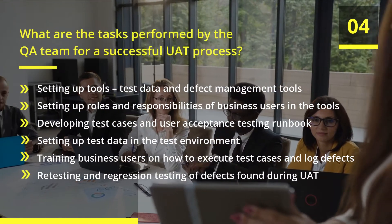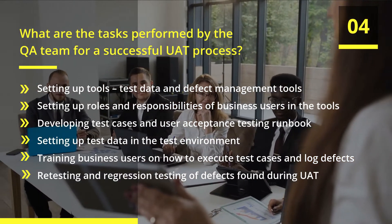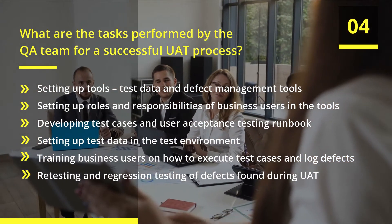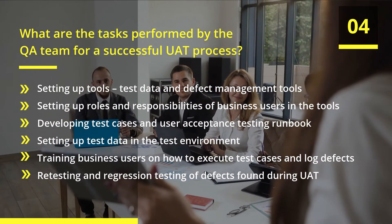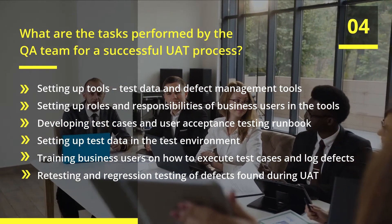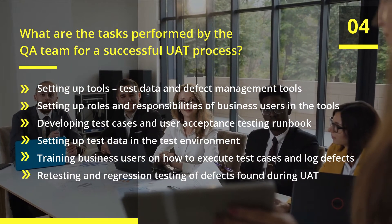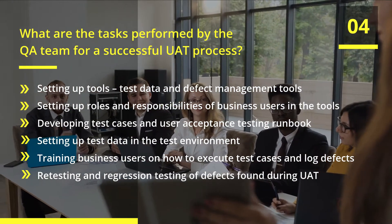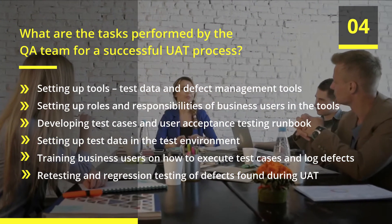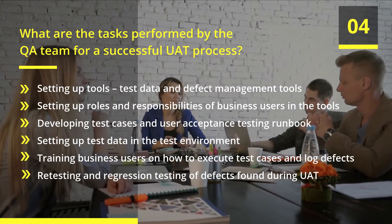What are the tasks performed by the QA team for a successful user acceptance testing process? First, setting up rules, test data, and defect management tools. Second, setting up roles and responsibilities of business users in the tools. Third, developing test cases and user acceptance testing runbook. Fourth, setting up test data in the test environment.